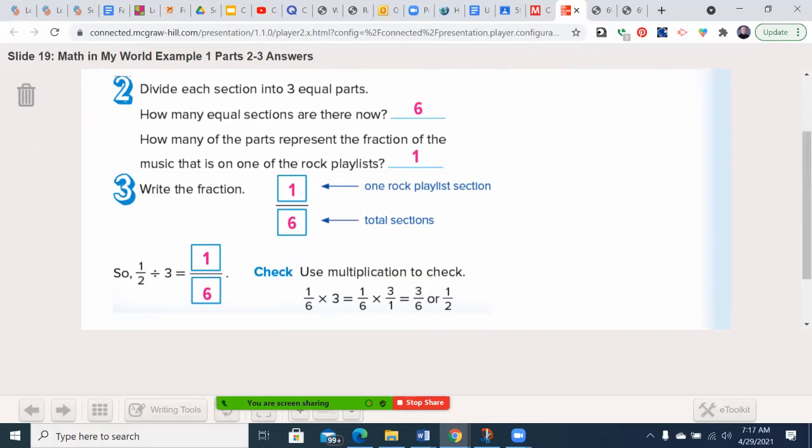1/6 times 3 ones equals 3/6. Check your work there. Back to 1/2. All right, let's go to the top of the next page.